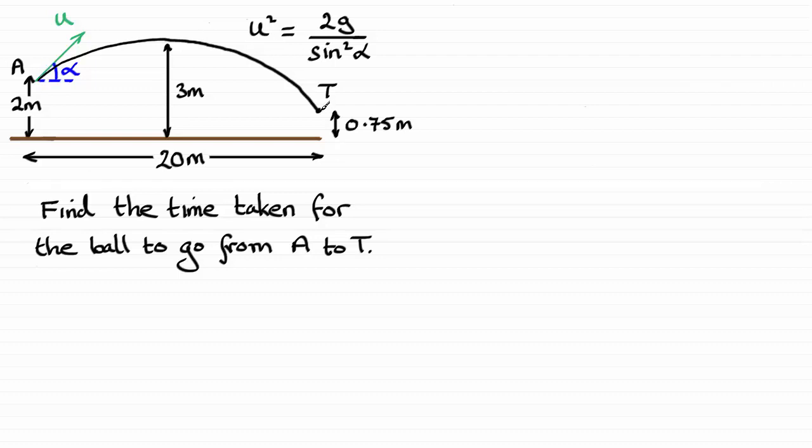And to do this, all I'm going to be looking at is what we established in part B of the question. That was that we had tan alpha equaled a quarter, and we also established that the time T squared equaled 200 tan squared alpha over G.